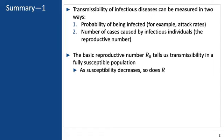The basic reproductive number tells us transmissibility in a fully susceptible population. And as susceptibility decreases, so does the reproductive number.